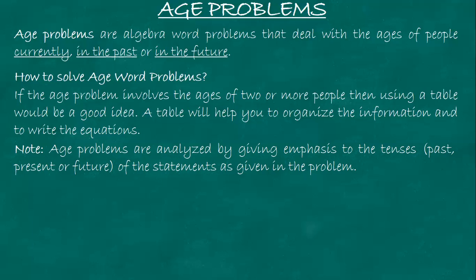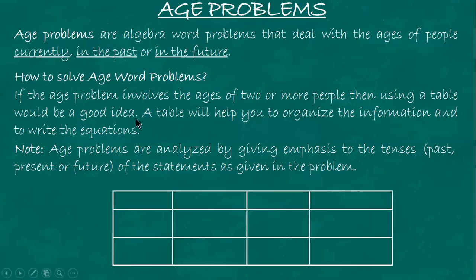So again, organize and draw a table to organize your solutions. In your table, you'll have the names of the people - Pedro or Juan. Then you have present, past, and future columns. An example for past: two years ago. An example for future: three years from now or three years after.